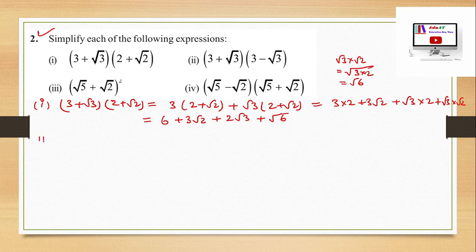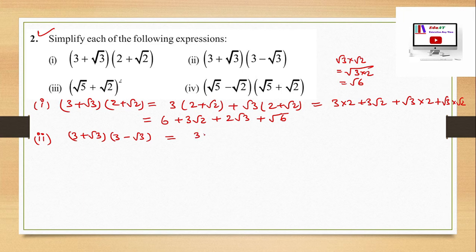Second part: (3 + √3)(3 − √3). This is in the form (a + b)(a − b), which equals a² − b². So it is 3² − (√3)² = 9 − 3 = 6. The answer is 6.